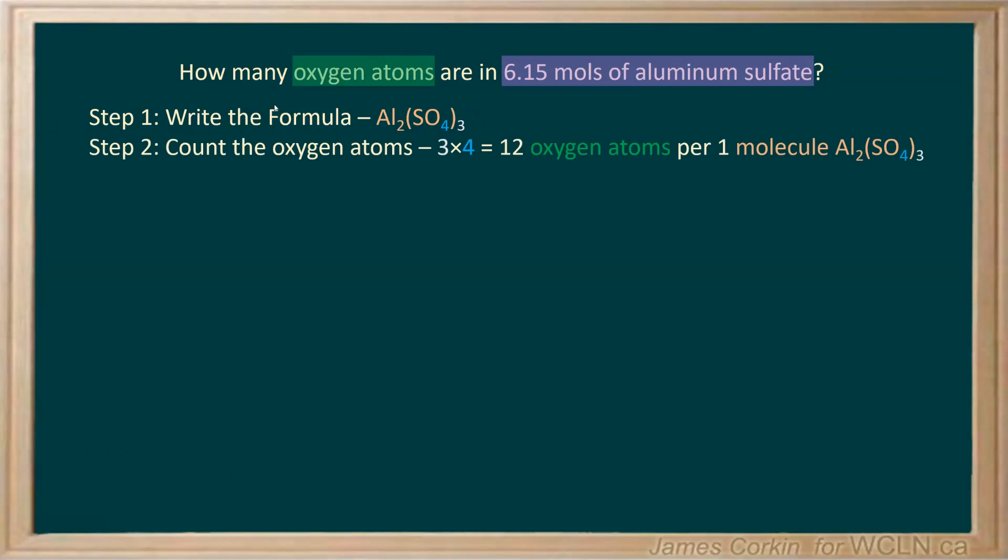Since we're asked about oxygen atoms, we need to count how many are in this formula. Since you have a 4 on the inside of the bracket—there are 4 oxygens in one sulfate—and there are 3 sulfates, you multiply those numbers together. In that formula, there are a total of 12 oxygen atoms per one molecule of aluminum sulfate.